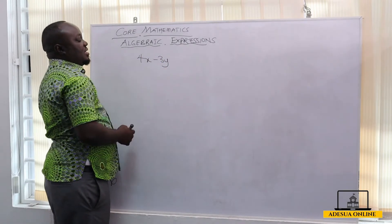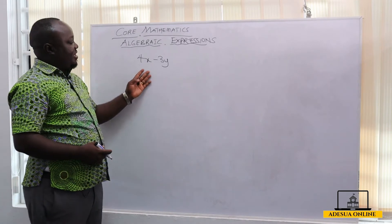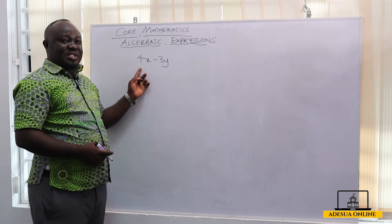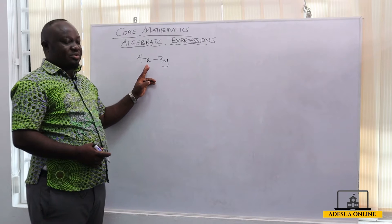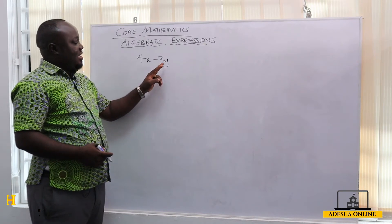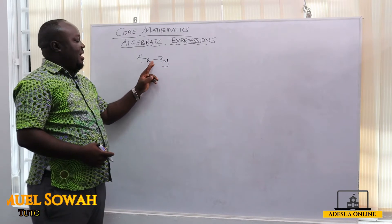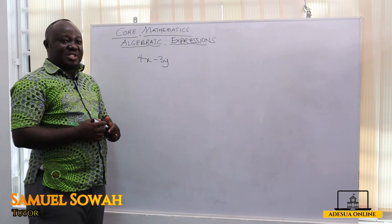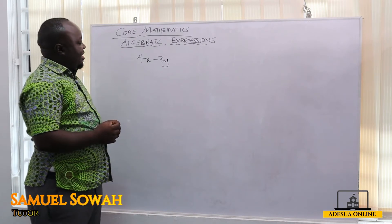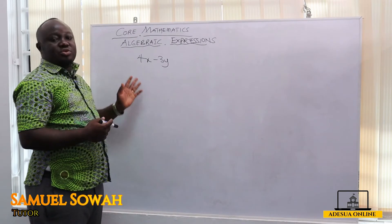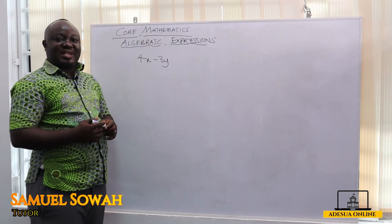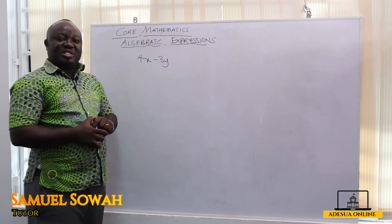The 4 is a constant and the x is a variable. 3 is also a constant and y is the variable. They are separated by a minus sign, which is our operation. So algebraic expression is just combining letters and operations together.